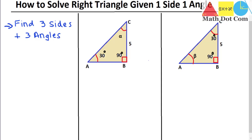Now it depends what is given. Sometimes you are given with one side and one angle, sometimes with one angle and two sides — there are different cases. But the base method is the same for all. First we will see how you can find the side lengths, then we will solve the triangle one by one.